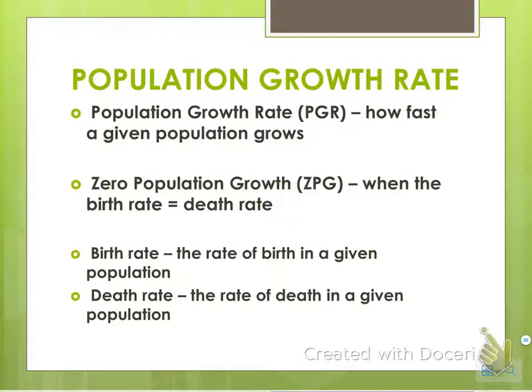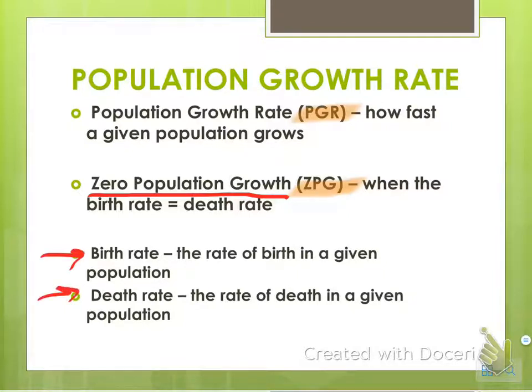Population growth rate, or PGR, is how fast a population grows — the human population growth rate grows very quickly. Zero population growth, or ZPG, is when birth rate equals death rate, meaning things are roughly equal. Birth rate is the rate of birth in a population; death rate is the rate of death — two fairly self-explanatory terms.